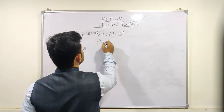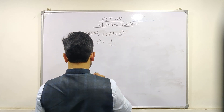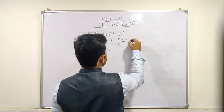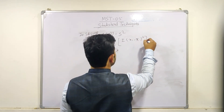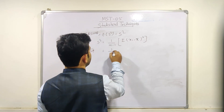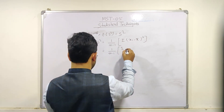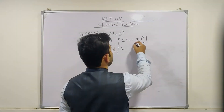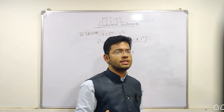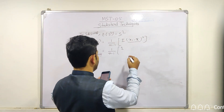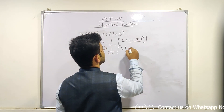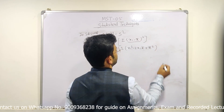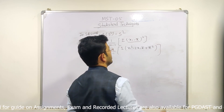In this case, s² is defined as 1/(n−1) times the summation of (xi − x̄)². We expand this bracket: (xi − x̄)² = xi² − 2xi·x̄ + x̄², using the (a − b)² identity, and then we multiply through.